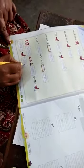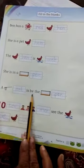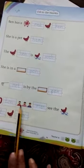Once again I will read it for you children. Ben has a red hen. She is a pet hen. The hen is wet. She is in a pen. The net is by the pen. Ten men see the wet hen. Thank you children. And page number 21.